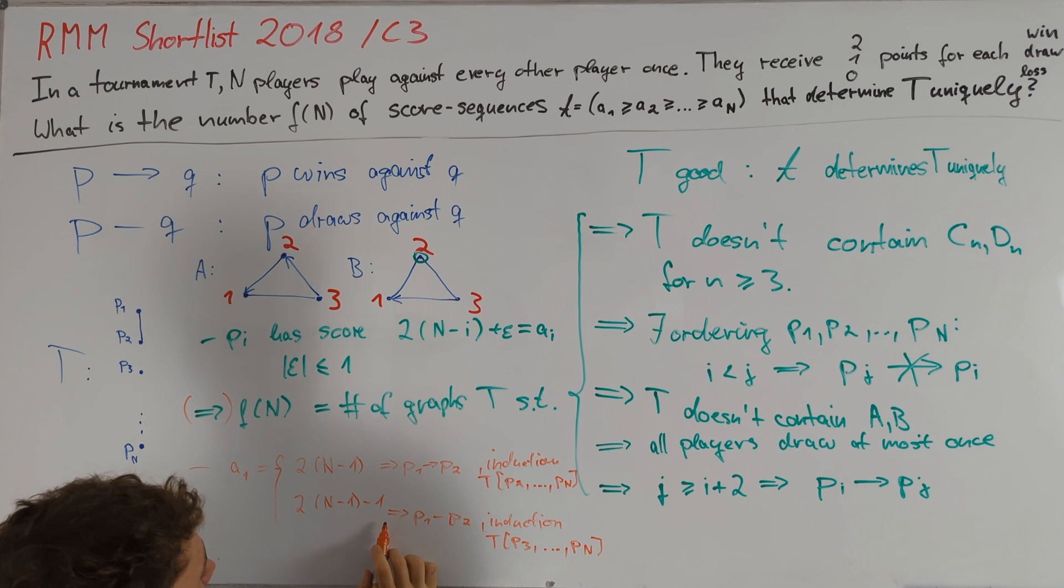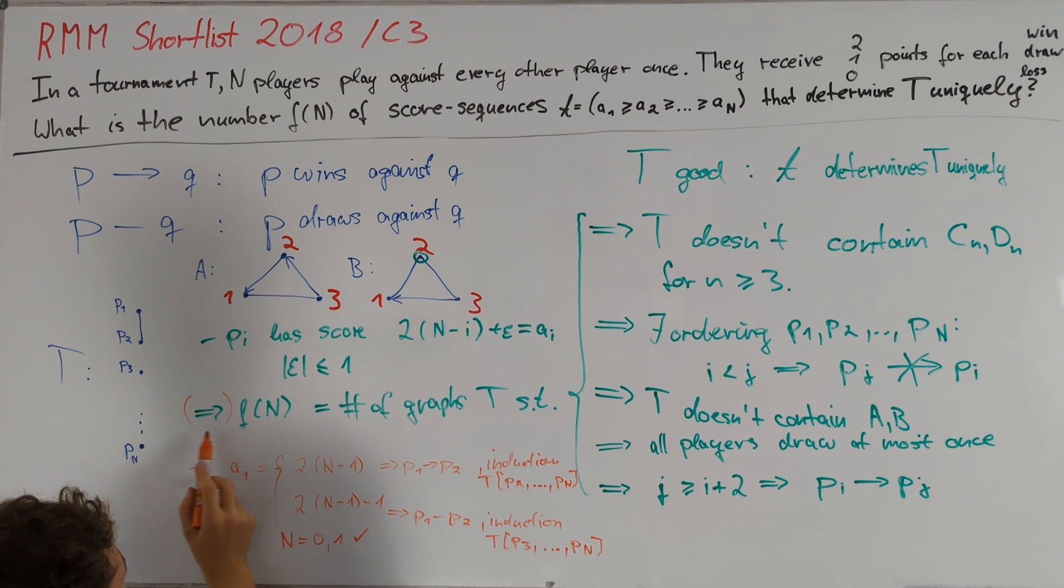I should note that this is only true when N is greater than or equal to 2. But for N equals 0 or 1, the statement is clear, and this also gives us our base case, and therefore this implication is proven.